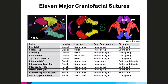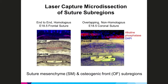Our approach is to perform laser capture microdissection of embryonic sutures, as shown for E18.5 in this slide. We isolate osteogenic fronts and suture mesenchyme by laser capture microdissection to generate RNA-seq libraries. Here we show two examples with an alkaline phosphatase stained section of a suture at the top of each to show the limits of the osteogenic fronts and the intervening suture mesenchyme — on the left, a frontal suture, and on the right, a coronal suture.